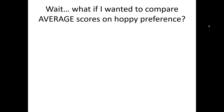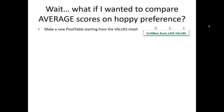We can still do that with pivot tables. This time we're going to make a new pivot table, but we're going to start with the Values tab of our data set since we're going to actually need the code values of 1, 2, 3, 4, and 5 to calculate a proper average.